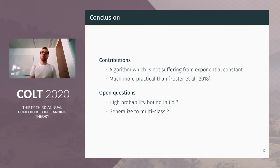We left as an open question if it's possible to show high probability bounds in the IID setting for the algorithm, and if it's possible to generalize to multi-class learning. So, thanks for watching, and see you for the questions.